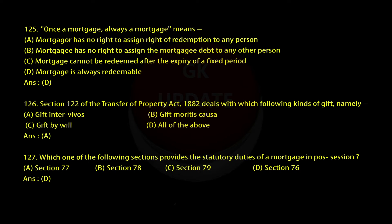Question 126: Section 122 of the Transfer of Property Act, 1882 deals with which of the following kinds of gift? A: Gift inter vivos. B: Gift mortis causa. C: Gift by will. D: All of the above. Answer: A.